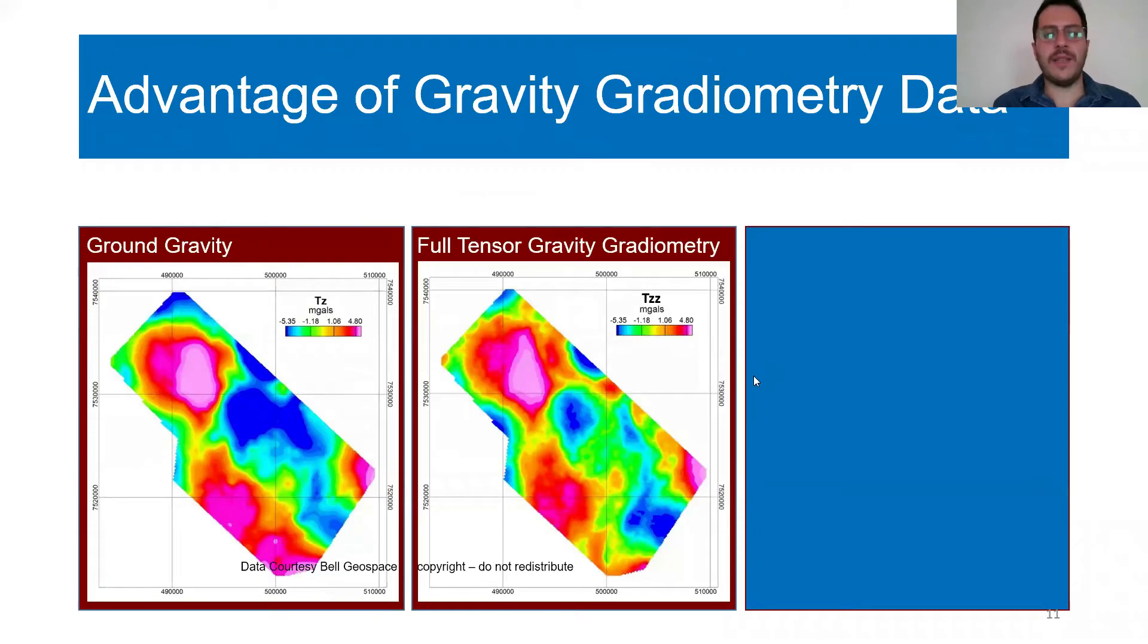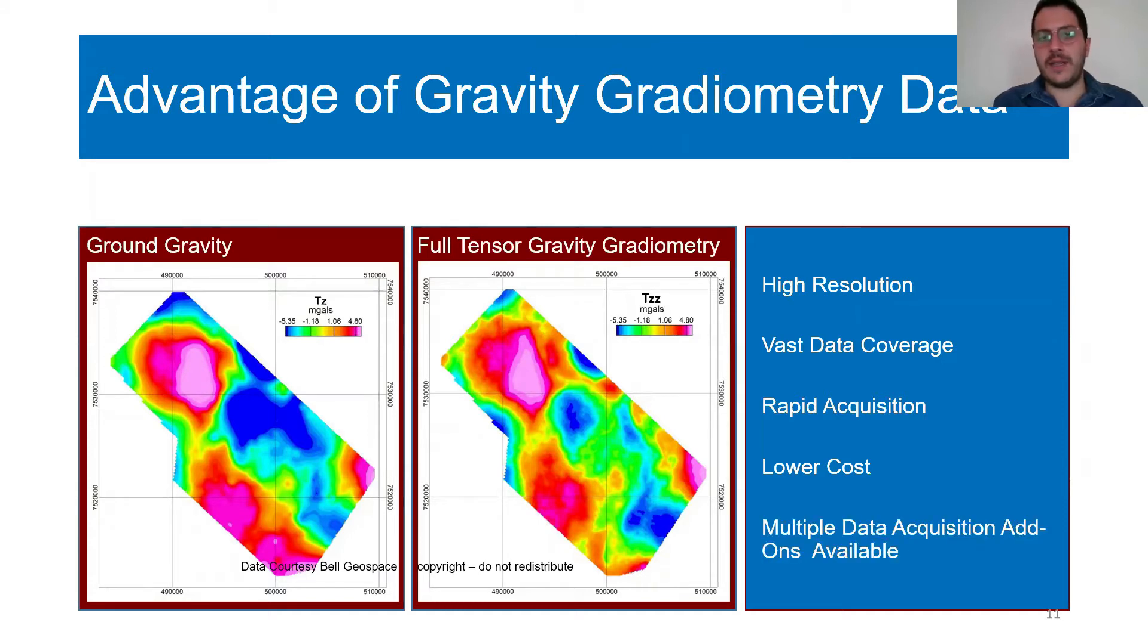There are a number of advantages of using gravity gradiometric data compared to ground gravity. It provides us high resolution as we can measure the gravity both horizontally and vertically. Sometimes because of hostile environment or accessibility, data coverage can be hard with ground gravity, but we can eliminate this problem using the full tensor gravity gradiometric system in airborne measurements. Airborne measurements make data acquisition rapid, more straightforward, and potentially cheaper than ground gravity. Another benefit is that we can also acquire lidar and aeromagnetic data simultaneously.